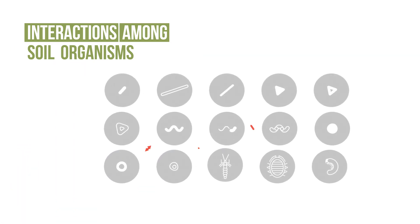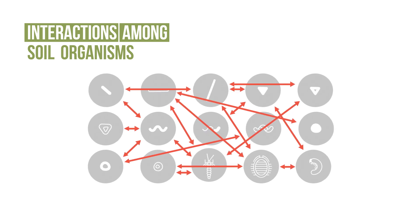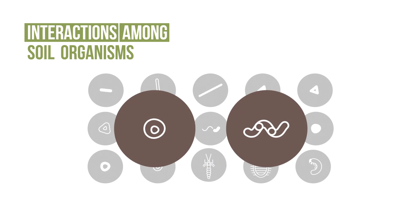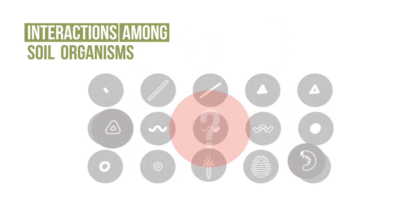The great diversity of organisms in the soil means that there are many interactions amongst them. Most of the mechanisms underlying these interactions are not well understood, but there are examples of interactions which have been successfully investigated and explained.